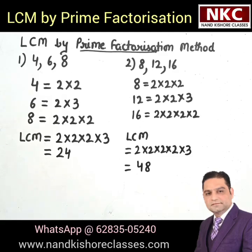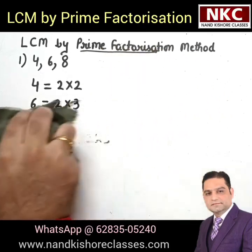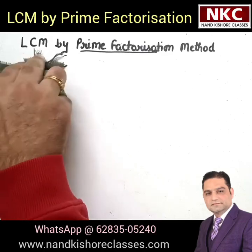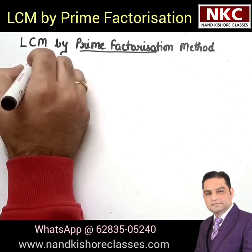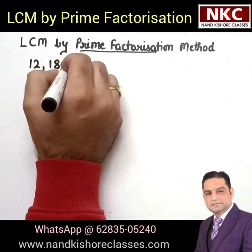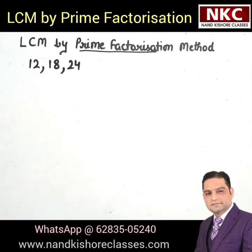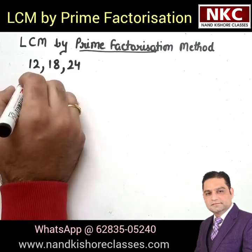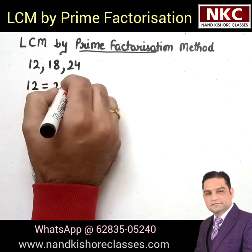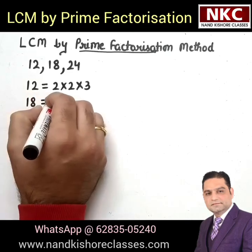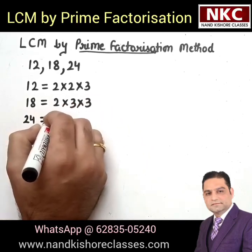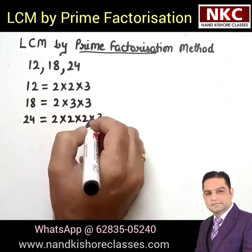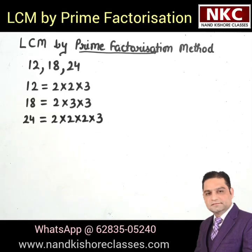I hope you are able to understand the concept, and this rule can be used for any big numbers as well. Let us take a few more examples with bigger numbers. Let's find LCM of 12, 18 and 24. Prime factorization of 12 is 2 times 2 times 3. For 18, it is 2 times 3 times 3. And for 24, it is 2 times 2 times 2 times 3. This is the prime factorization of 12, 18 and 24.